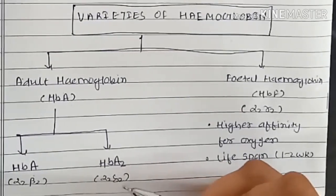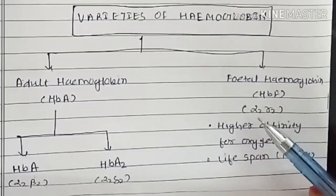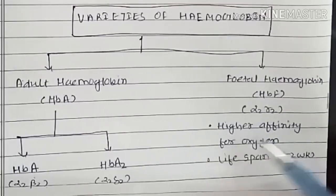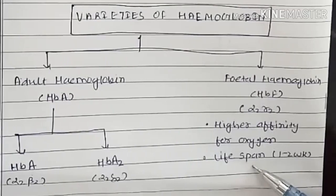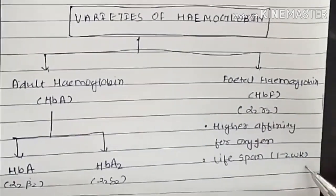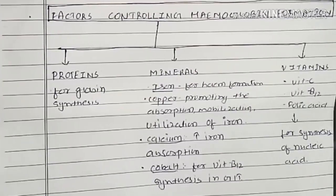Fetal hemoglobin has globin chain alpha-2-gamma-2. It has higher affinity for oxygen, but lifespan of such RBCs containing hemoglobin F is only 1-2 weeks. Factors controlling hemoglobin formation.